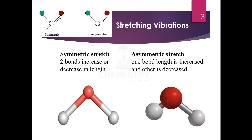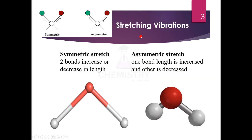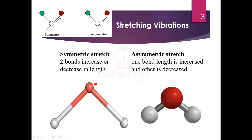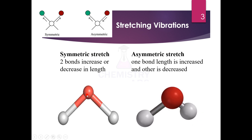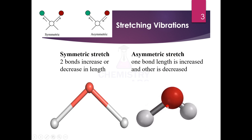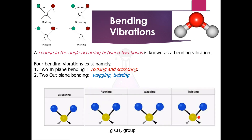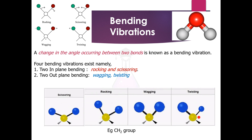Depending upon the types of stretching, we have symmetric and asymmetric stretch. Symmetric means both bonds are increasing or decreasing at the same time. Asymmetric means one bond length increases and one bond length decreases. This is what happens in stretching when the molecule absorbs radiation.